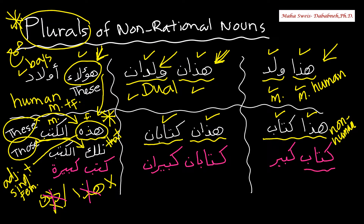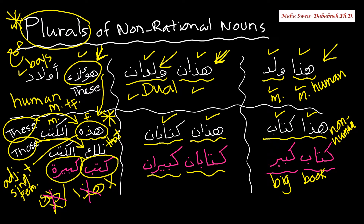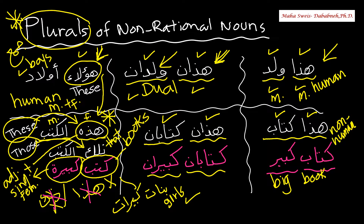Let's do another example: kitab kabir — big book. I want to change kitab to two: kitaban kabiran — two big books. Then kutub kabira — the adjective remains singular and feminine. You cannot say kutub kabirat for a plural of non-human nouns. For example, if I have banat — girls — I can say banat kabirat, because these are human beings. But for non-human, books are non-human, so the adjective should remain feminine and singular all the time.